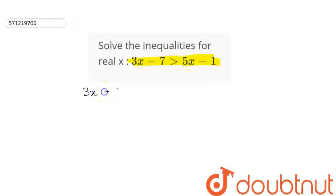So, we are given 3x minus 7 is greater than 5x minus 1. Now, we will bring all the variables on one side and constants on the other.